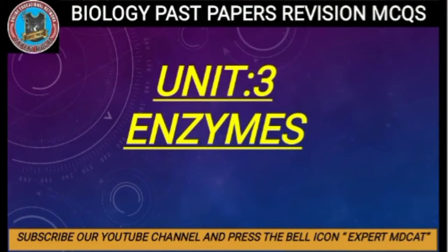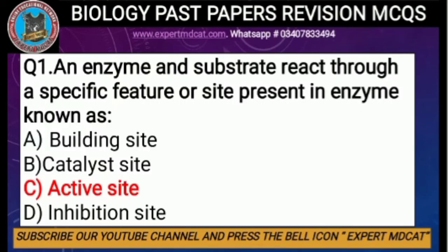Bismillahirrahmanirrahim, Assalamu Alaikum everyone. Today we are going to discuss the MCQs of Chapter Number 3, Enzymes, from Biology Book One. This is the platform of Expert MDKT. The first question is: an enzyme and substrate react at a specific site present on the enzyme known as — options are: A) binding site, B) catalyst site, C) active site, D) inhibition site. The correct option is C, active site.